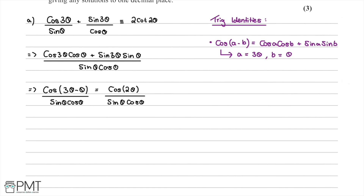The next step is to look at the denominator and see if there's anything we can do. We know the double angle formula: sin(2θ) = 2sinθ cosθ. What we have as our denominator, sinθ cosθ, is very similar to this.